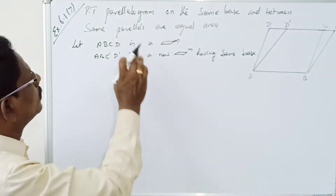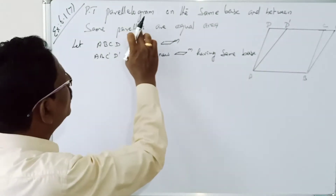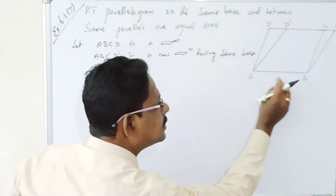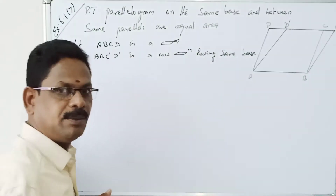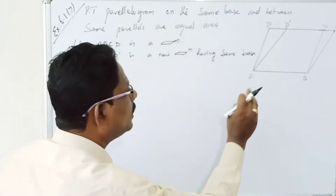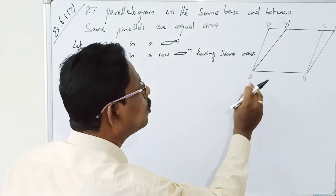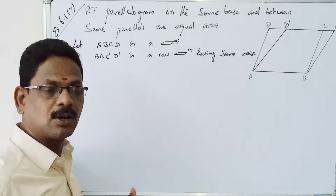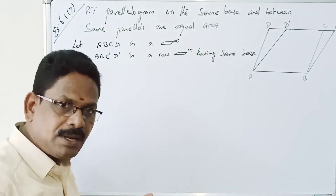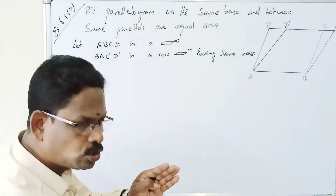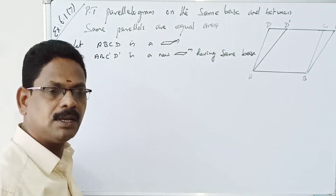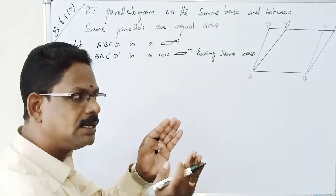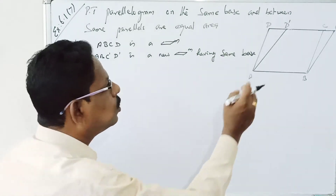Welcome to Parallelograms. We will prove that parallelograms on the same base are equal in area. The first parallelogram has vertices A, B, C, E — this is the first parallelogram. It shares the same base but the other side is just parallel.